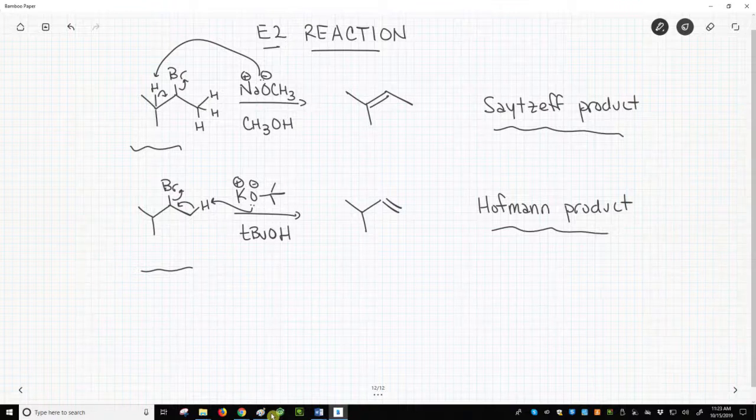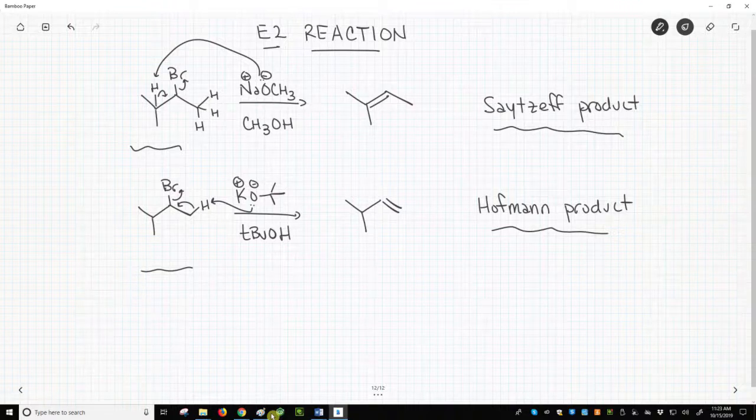The alkoxides in these reactions were almost certainly formed through reaction of an alcohol with sodium hydride or a metal like sodium or potassium.